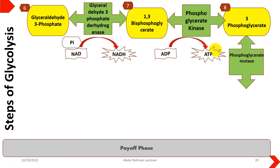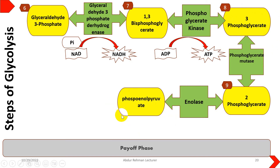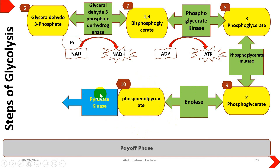Then 3-phosphoglycerate undergoes rearrangement by phosphoglycerate mutase, resulting in 2-phosphoglycerate. 2-phosphoglycerate is then converted with the help of enolase, which makes it thermodynamically stable, forming phosphoenolpyruvate. Phosphoenolpyruvate is now in a suitable position so that another phosphate molecule will be extracted from it with the help of pyruvate kinase. In the final step, phosphoenolpyruvate with pyruvate kinase produces another ATP.